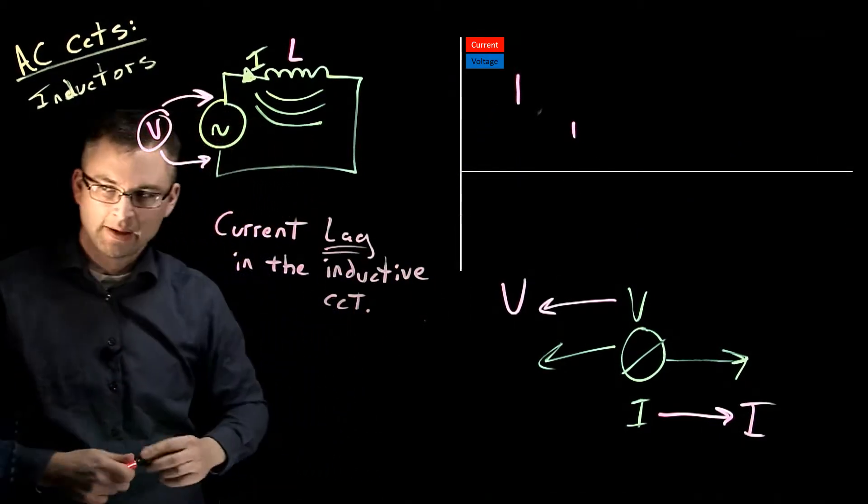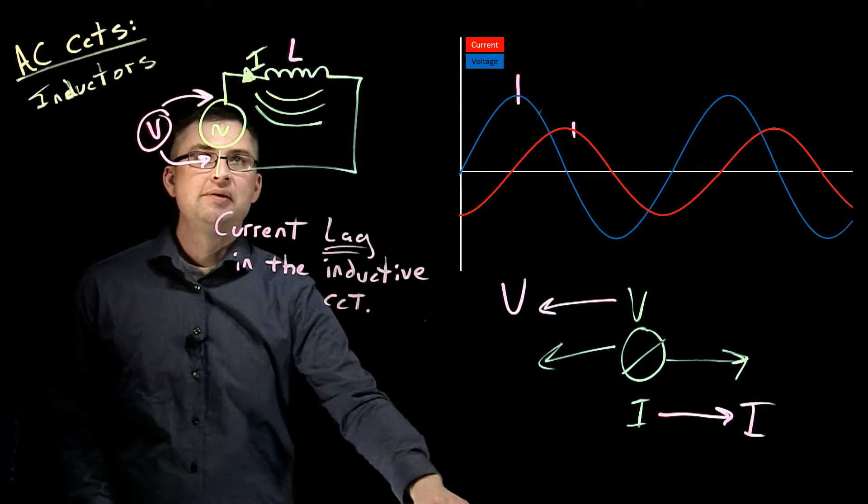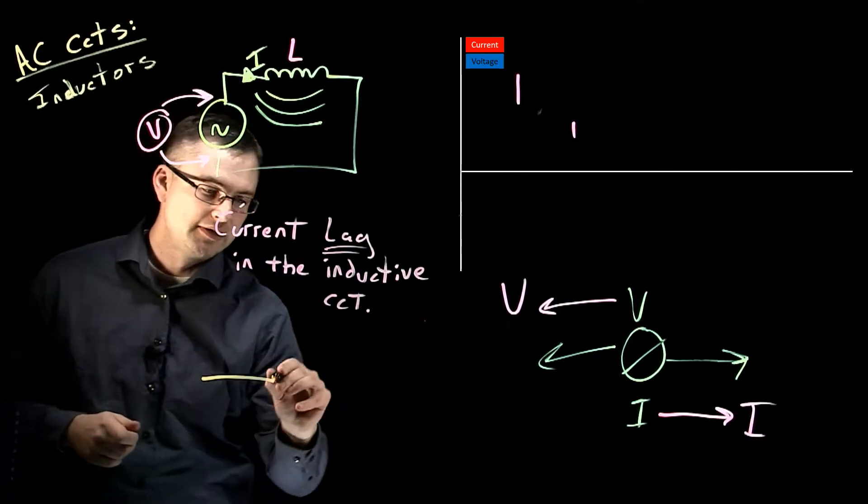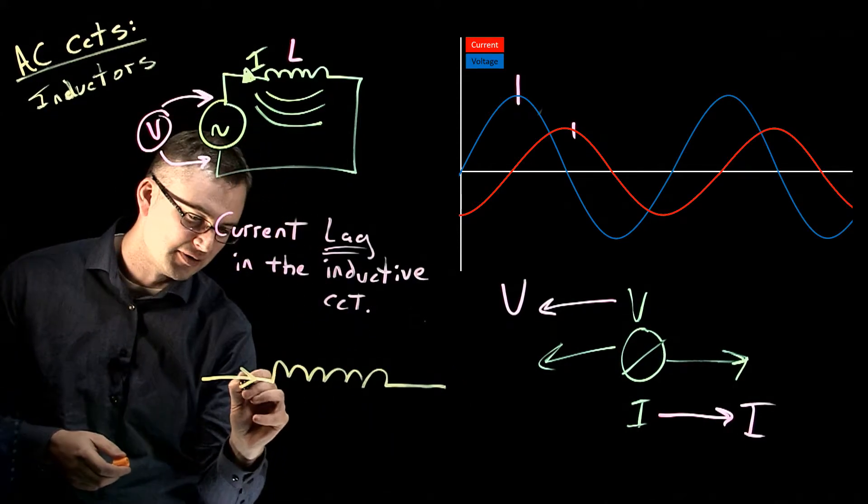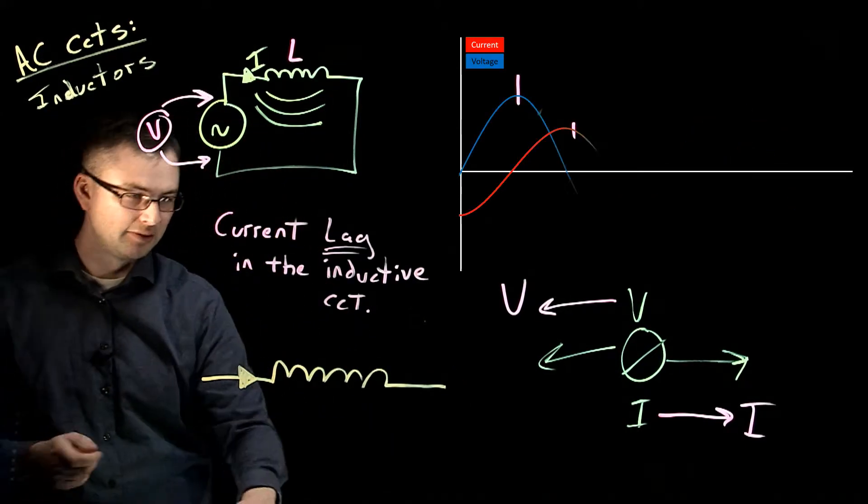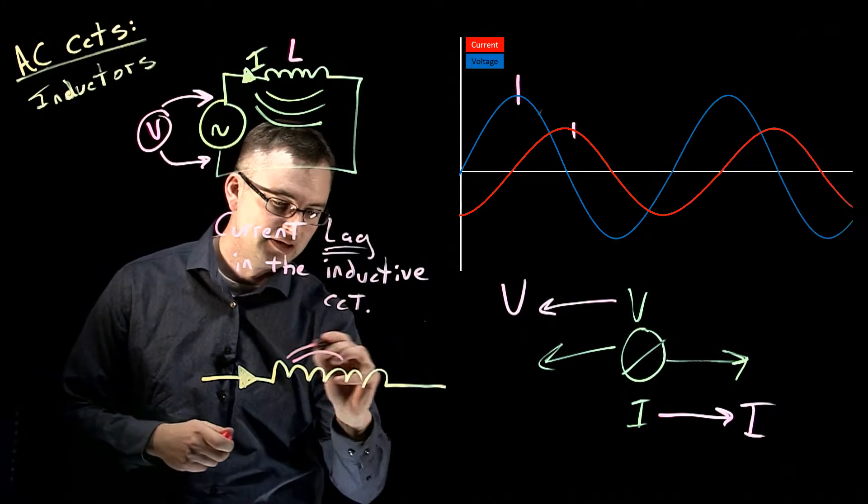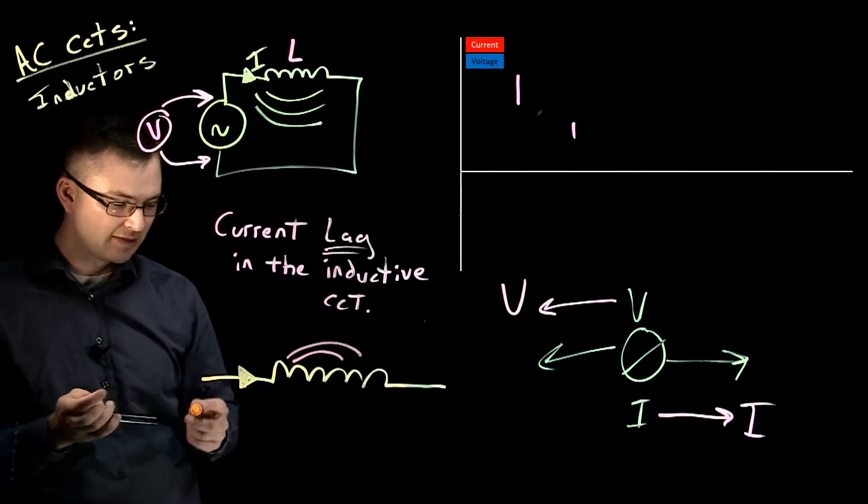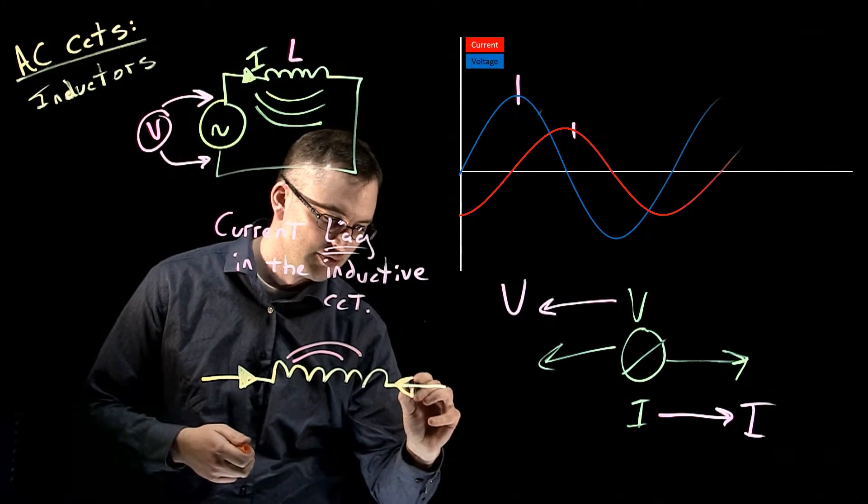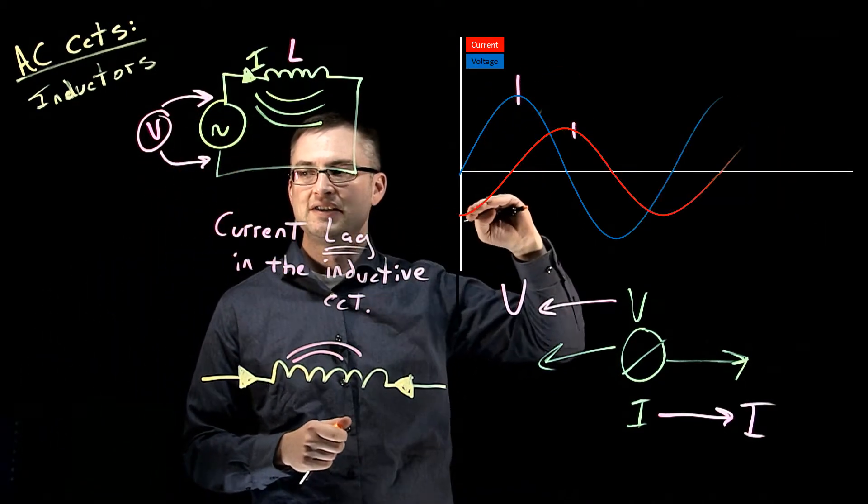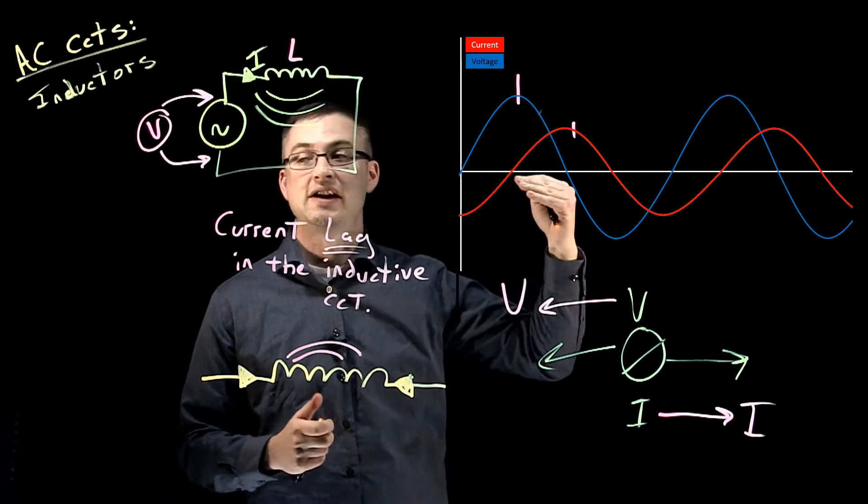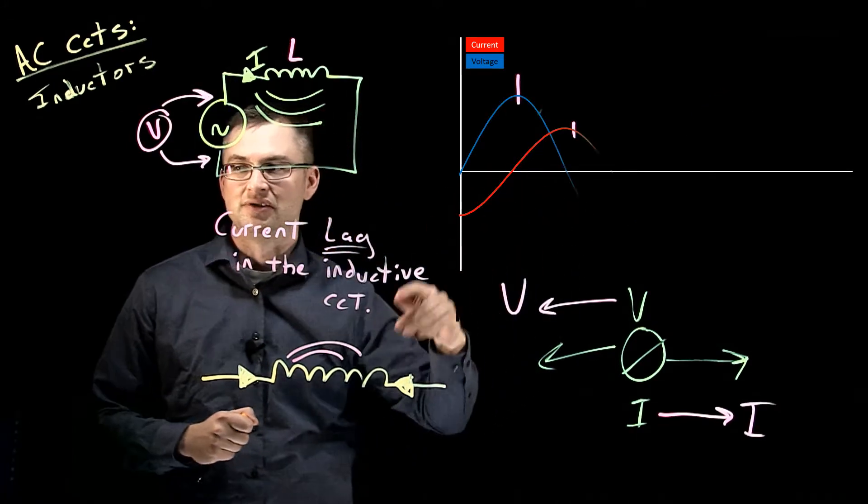Just to recap why that might occur - when we try to push current through the inductor, we get that expanding magnetic field, and it creates a counter-EMF which tries to push back on the source. As voltage is rising, our current is actually not rising with it. It's going in the opposite direction.